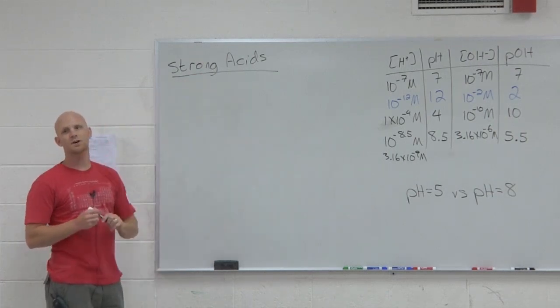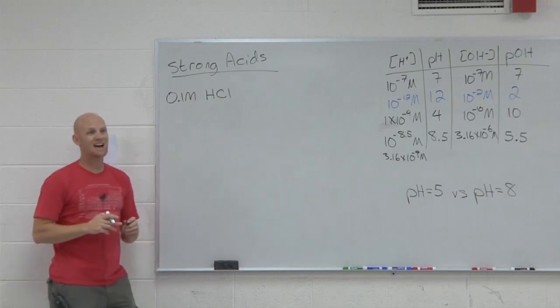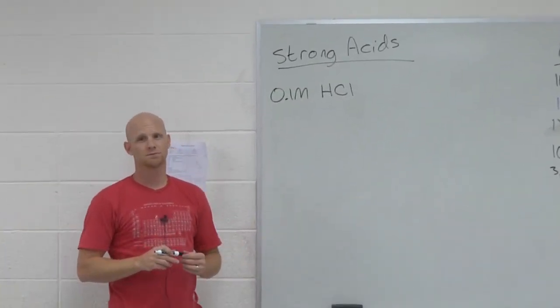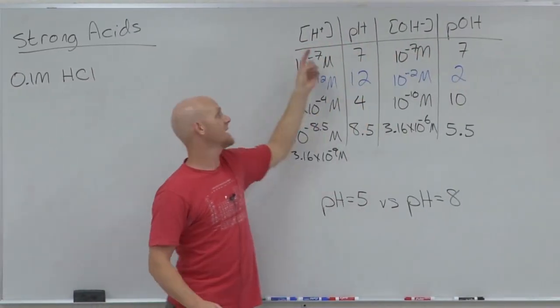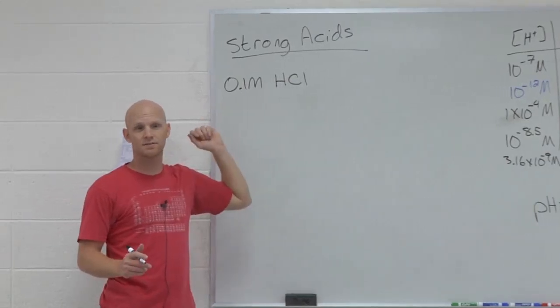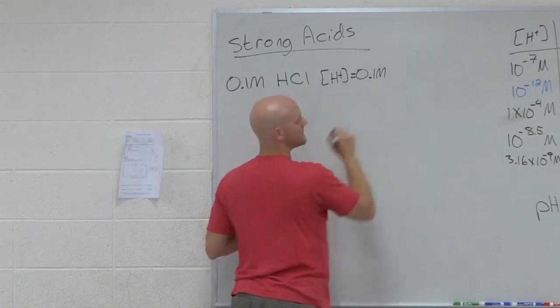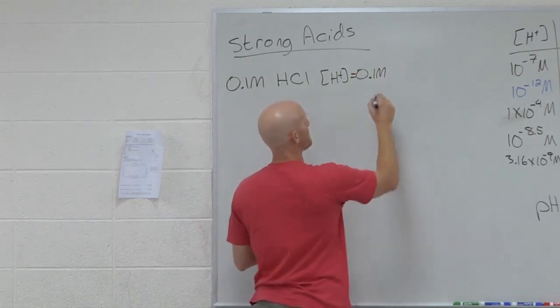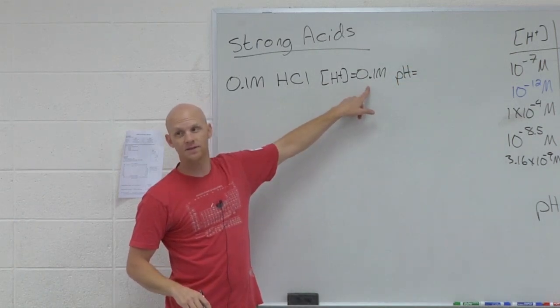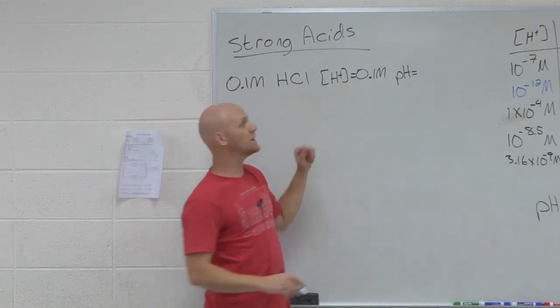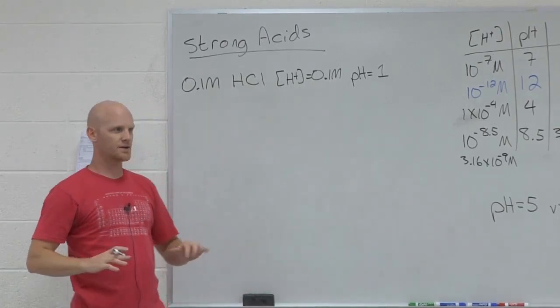The first type is finding the pH of a strong acid. Let's say I have 0.1 molar HCl. I want to know what's the pH. To get the pH, I need one of these. Which one am I probably going to figure out first? H+, because being a strong acid, this thing dissociates completely. So what is the H+ concentration in this solution? 0.1. And so what's the pH? Negative log of 0.1. Notice 0.1 is 10 to the negative 1, and the negative log of that would be positive 1.